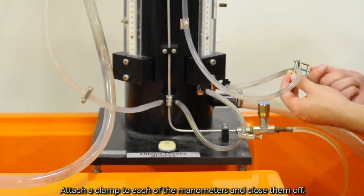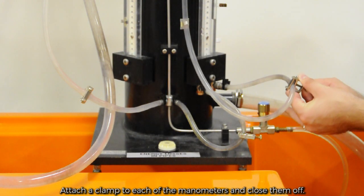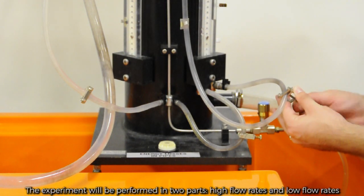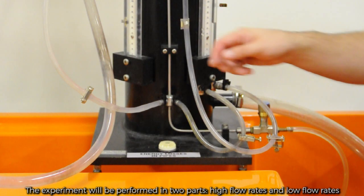Attach a clamp to each of the manometers and close them off. The experiment will be performed in two parts, high flow rates and low flow rates.